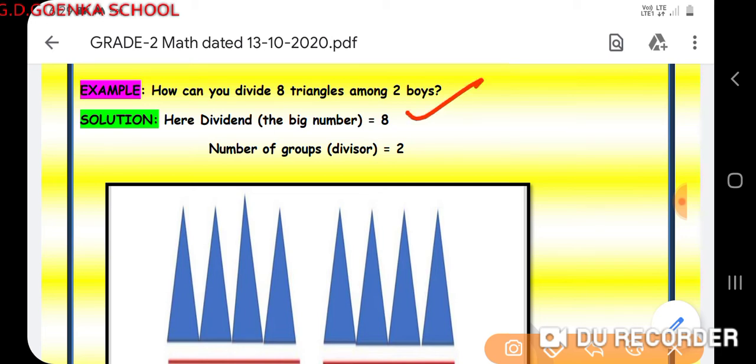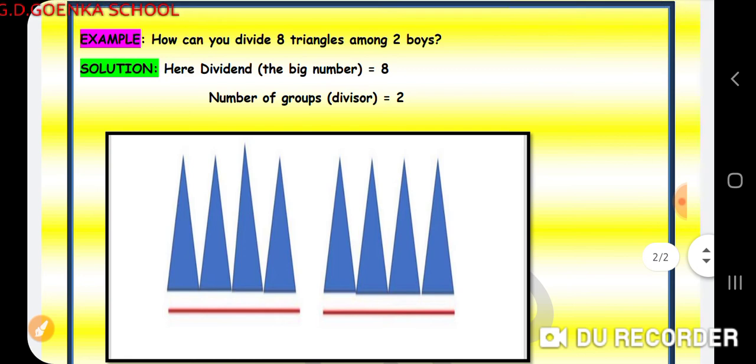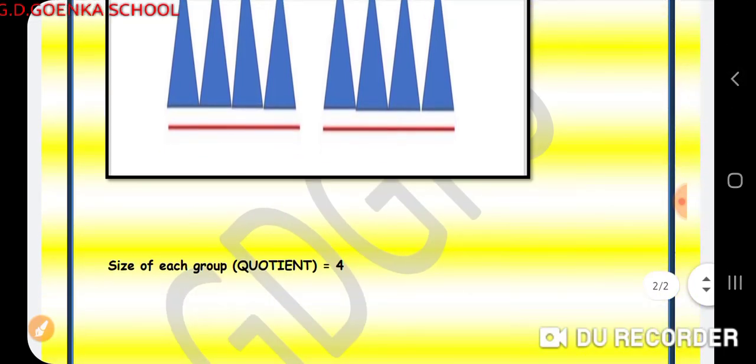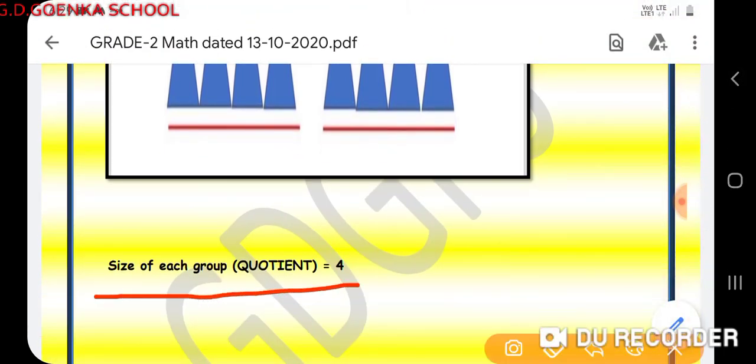So we will divide 8 triangles among 2 boys and each boy will get 4 triangles. So that is our quotient and that is also known as the size of the group.